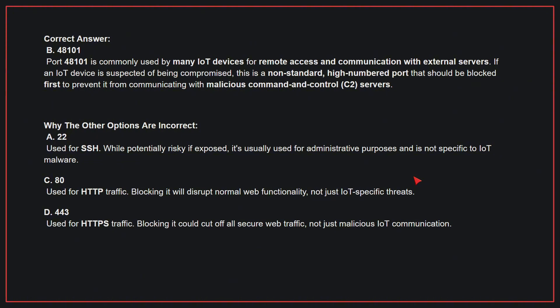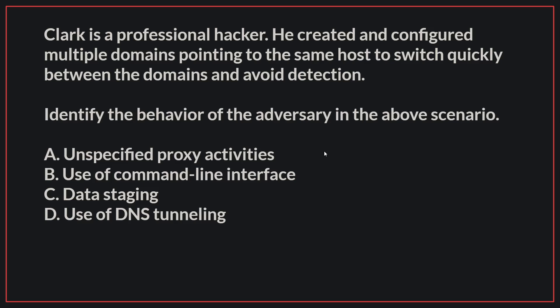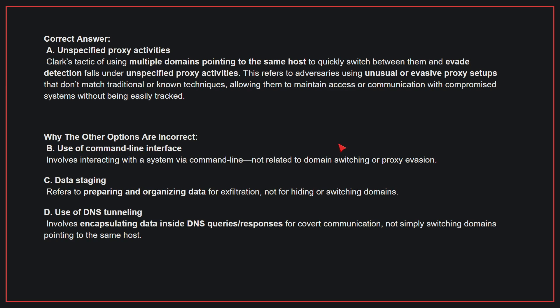Therefore, the correct answer is B. Clark is a professional hacker. He created and configured multiple domains pointing to the same host to switch quickly between the domains and avoid detection. Identify the behavior of the adversary in the above scenario. The correct answer is A, unspecified proxy activities. Clark's tactic of using multiple domains pointing to the same host to quickly switch between them and evade detection falls under unspecified proxy activities, referring to adversaries using unusual or evasive proxy setups that don't match traditional or known techniques.